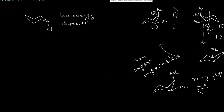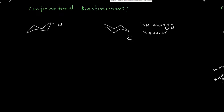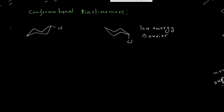Now we will look into conformational diastereomers. These two molecules are diastereomers. This molecule has a sigma plane, so it is not chiral. However, a molecule does not need to be chiral to have a diastereomer relationship. The definition of diastereomers is: if two molecules are not mirror images of each other and also not superimposable, they are diastereomers. These two molecules clearly are not mirror images and not superimposable, so they are diastereomers.